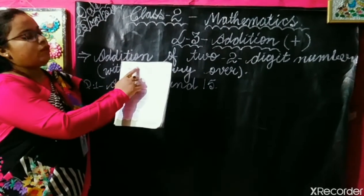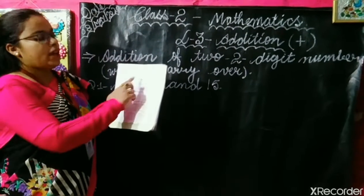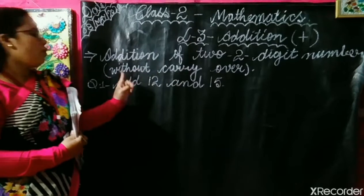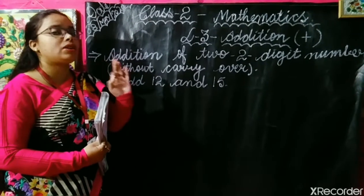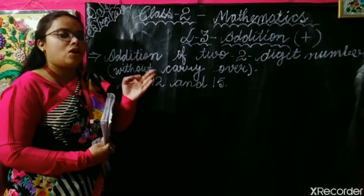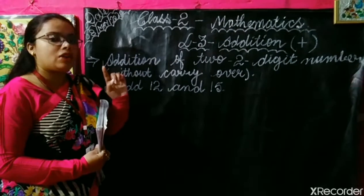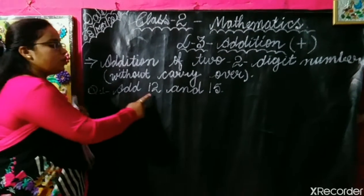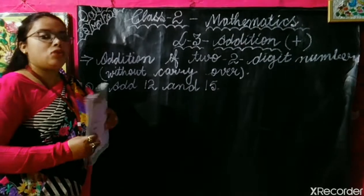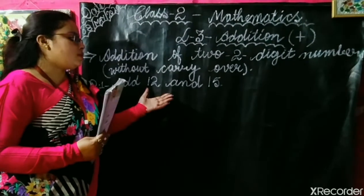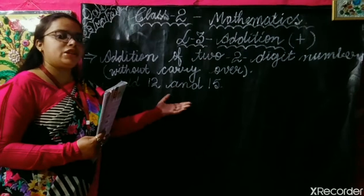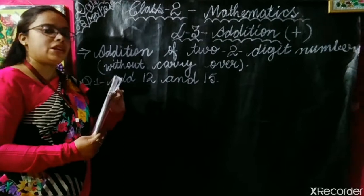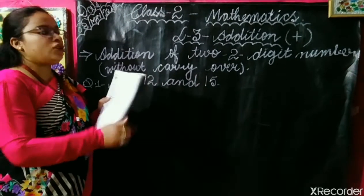Now, see — addition of two digit numbers without carry over. Here, the first method is given. I have written: addition of two digit numbers without carry over. This means we will not take any carry over questions. We are going to learn only simple questions. Question number one: I have written 12 and 15. No need to have any confusion, because this is written in another form, but I will be teaching you how to solve these questions.